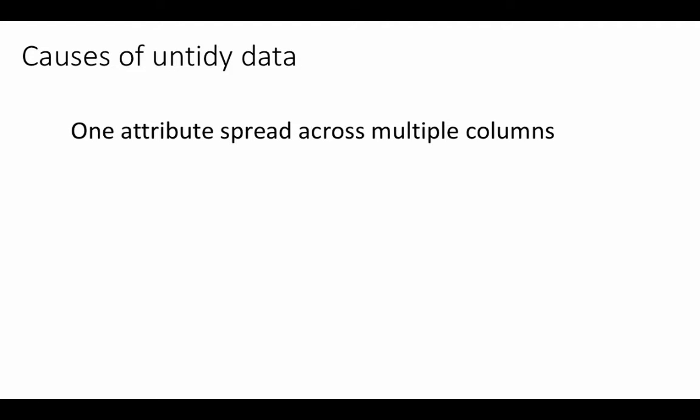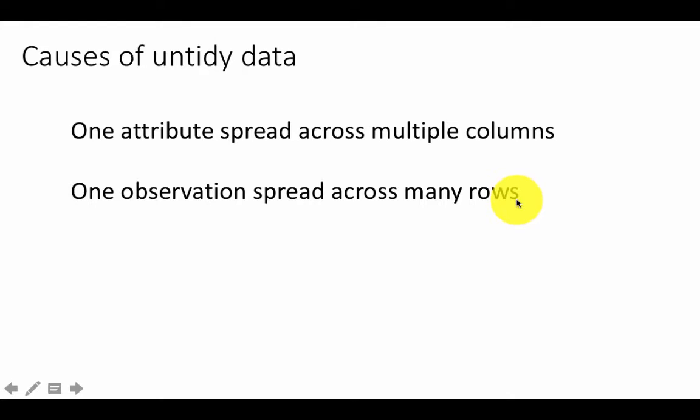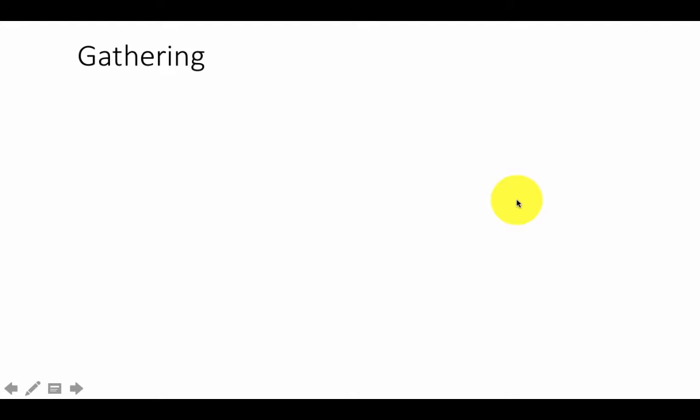So what are some of the other causes of untidy data? One is that an attribute may get spread across multiple columns, or an observation may end up spread across multiple rows. Now let's take a look at some methods for cleaning up untidy data. We have examples in Table 2, Table 3, and Table 4 AB — only Table 1 is tidy. When you encounter untidy data, you can compare it to Tables 2, 3, or 4A/4B and borrow the approach we are going to suggest for each one of those to make it tidy.